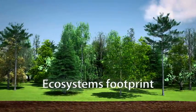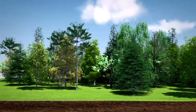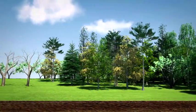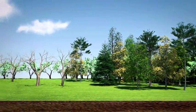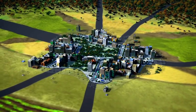The ecosystems footprint evaluates the deterioration of ecosystems and biodiversity. It takes into account pollution released into the environment and the change in land use.